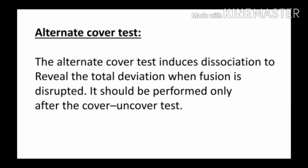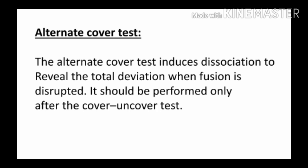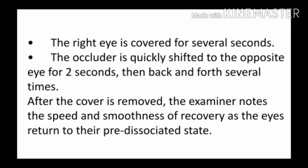The alternate cover test induces dissociation to reveal the total deviation when fusion is disrupted. It measures the total deviation — that is, latent plus manifest — and is always performed after the cover-uncover test. As the name suggests, cover one eye then the other alternately: cover the right eye for two to three seconds, quickly move the occluder to the left eye, wait two to three seconds, then move it back to the right eye. Repeat this several times, observing the movement of the eye being uncovered. If eyes deviate outward on uncovering, this is esophoria; if inward, exophoria.